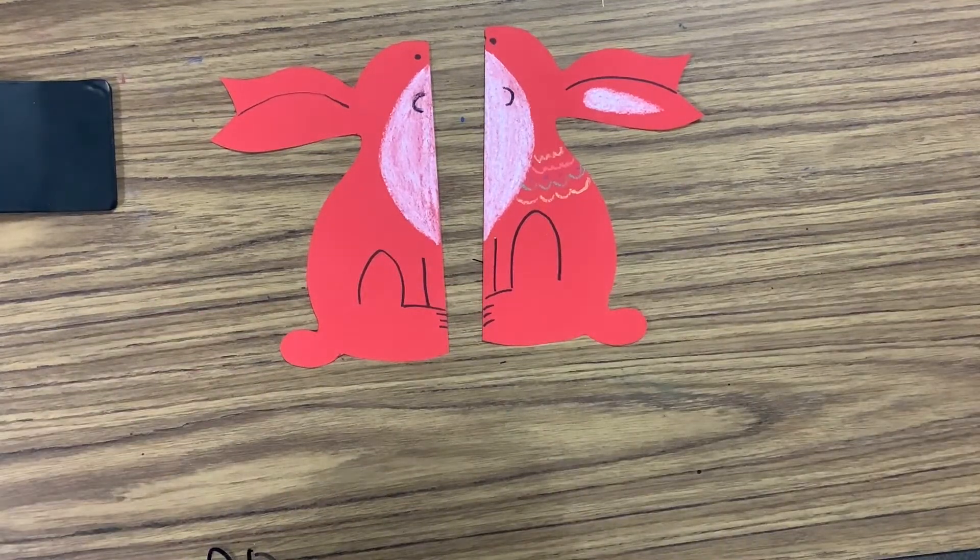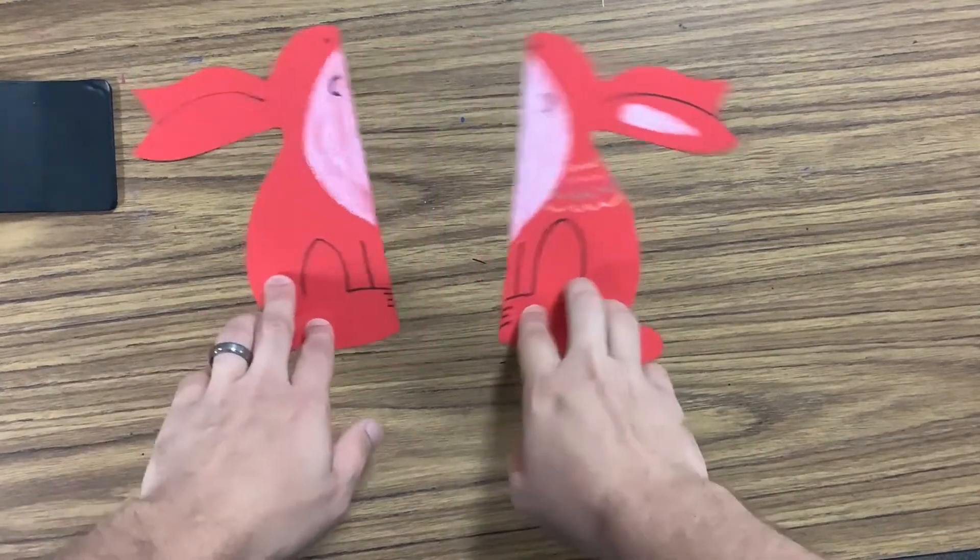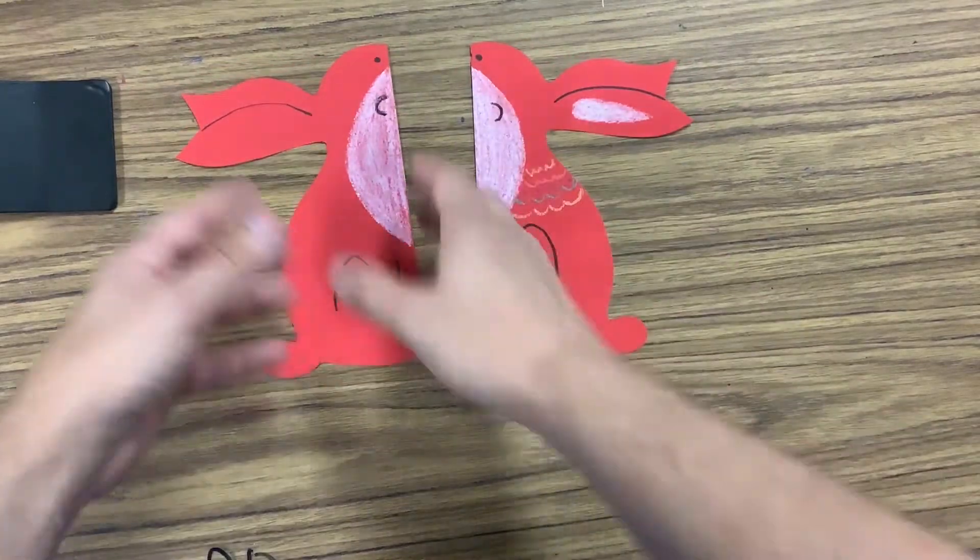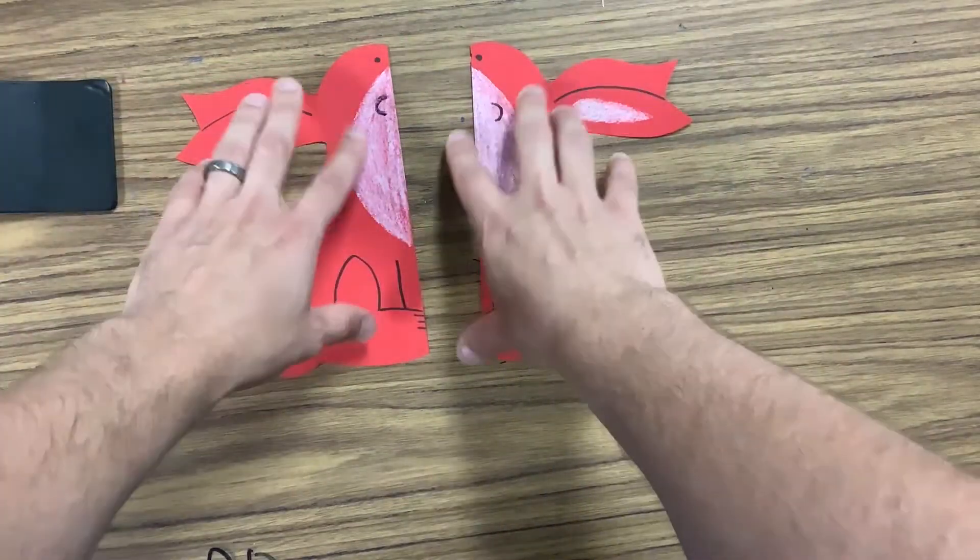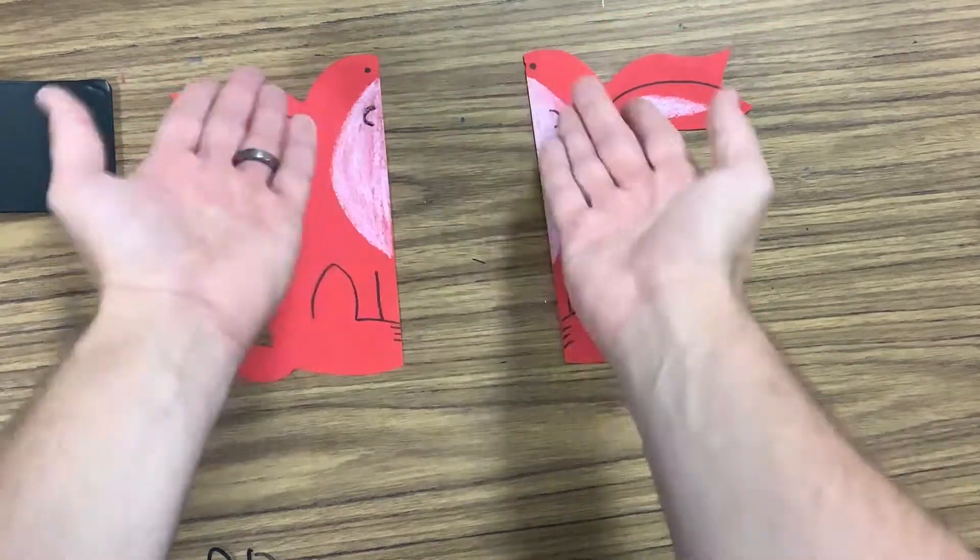So to get started with our bunnies, we'll be creating bunnies that look something similar to this. You can make it different to the form. But we want to make two bunnies that are matching but kind of flipped.